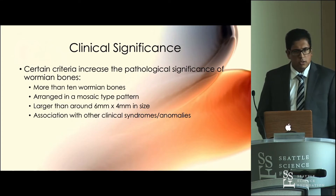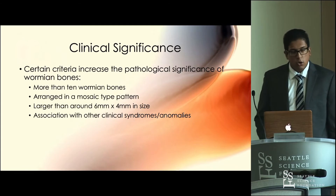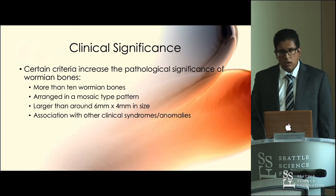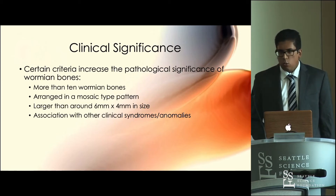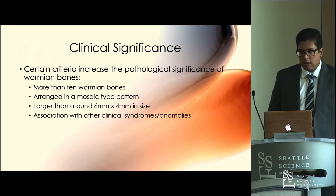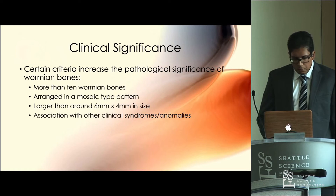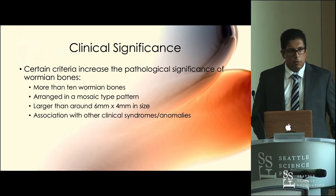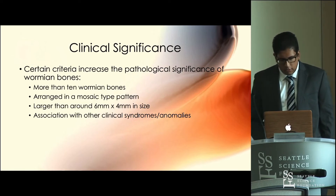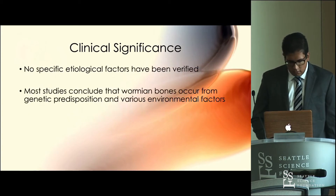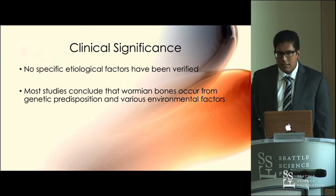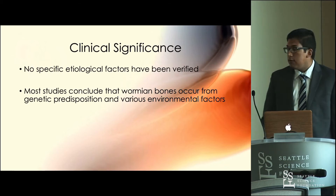When examining wormian bones, certain features increase their clinical or pathological significance. A comprehensive review concluded that when a patient has at least 10 or more wormian bones, when the bones are arranged in a mosaic-like pattern — meaning one bone adjacent to the next rather than scattered across the skull — and when individual bones are greater than six millimeters by four millimeters in size, these are the types that are more likely to cause downstream problems and may need to be operated on by a pediatric neurosurgeon. Ultimately, it's a combination of genetic and environmental factors that causes their occurrence.